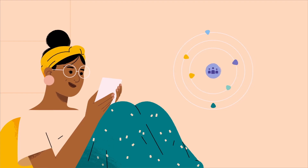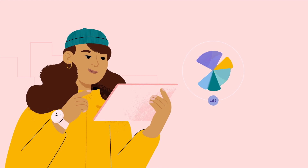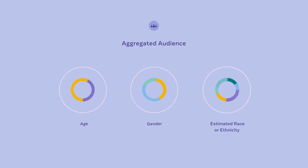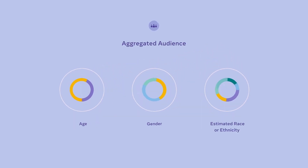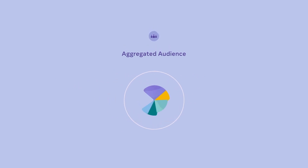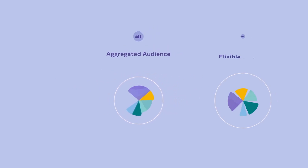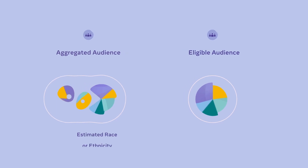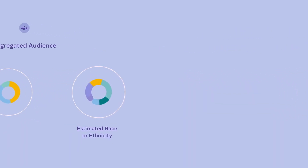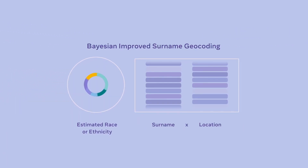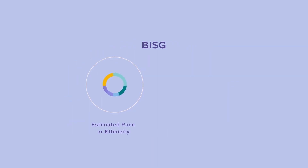Once Nora's ad is shown to enough people, the VRS will measure the aggregate age, gender, and estimated race or ethnicity distribution of those who have seen the ad, and compare that with the broader eligible audience of people who could have seen the ad. To help measure the estimated race or ethnicity distribution, the VRS will rely on a widely used method called BISG, with added privacy enhancements.